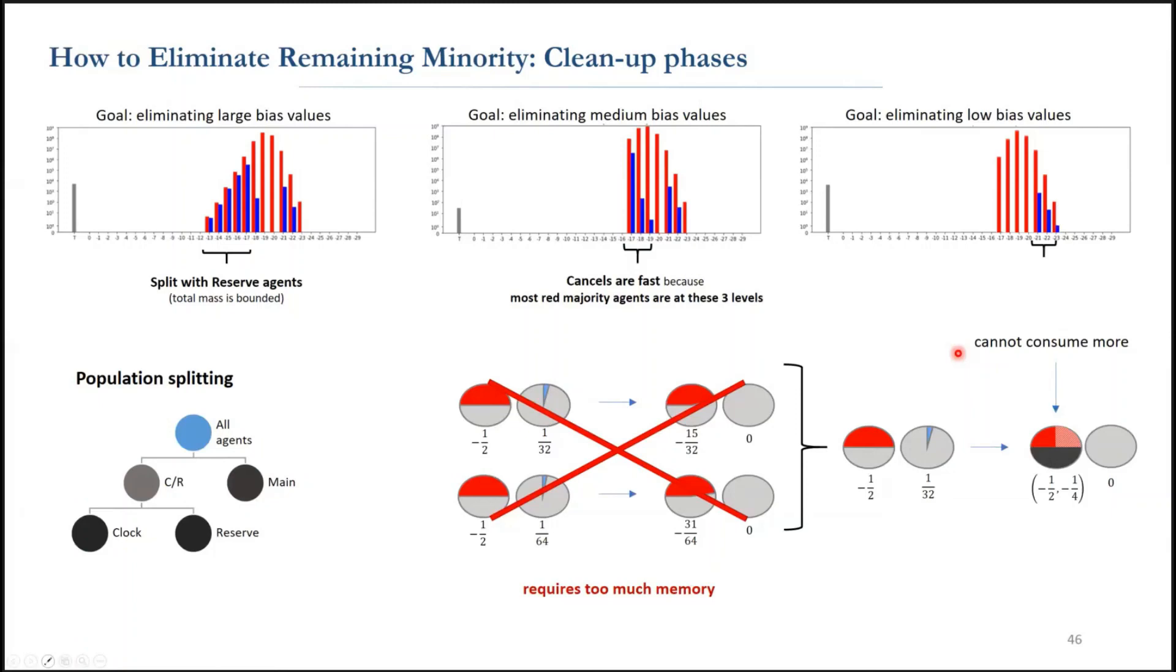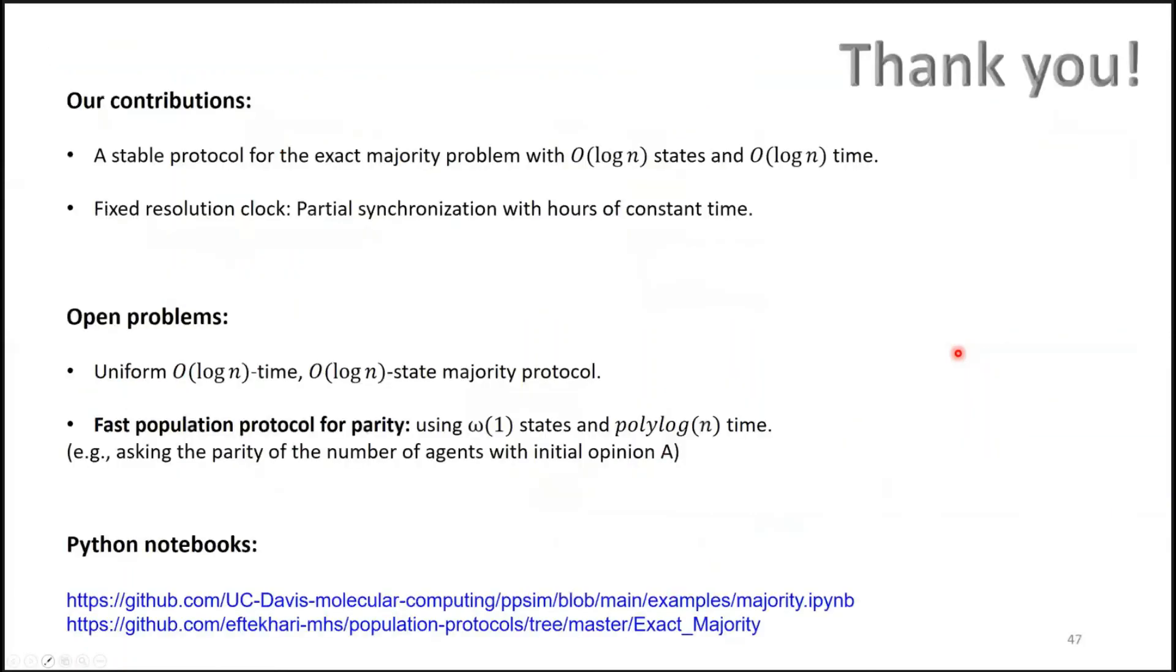This last trick doesn't preserve the value of the sum of the biases but still it preserves its sign. And that's enough to say which vote was the majority. Our entire majority protocol takes log n time using log n states and converges to the majority with probability 1 correctness. Moreover, if the initial difference between the agents in state A and B is zero, the protocol correctly reports tie.